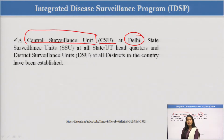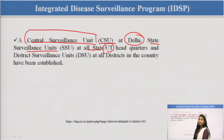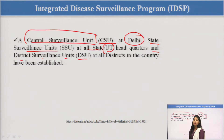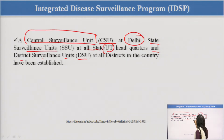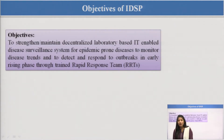After that we have units at the state level, called the State Surveillance Unit, SSU, which is present in all states including some union territories. We also have the DSU, the District Surveillance Unit, which monitors all disease patterns — their control, their prevention — and collects data at the district level. These are established at all districts in our country under this program.